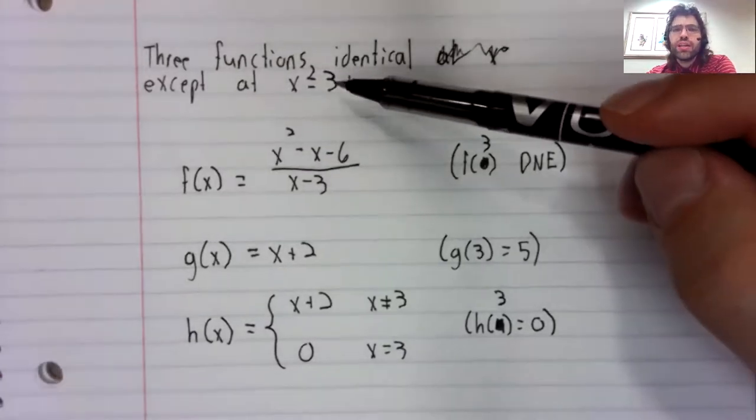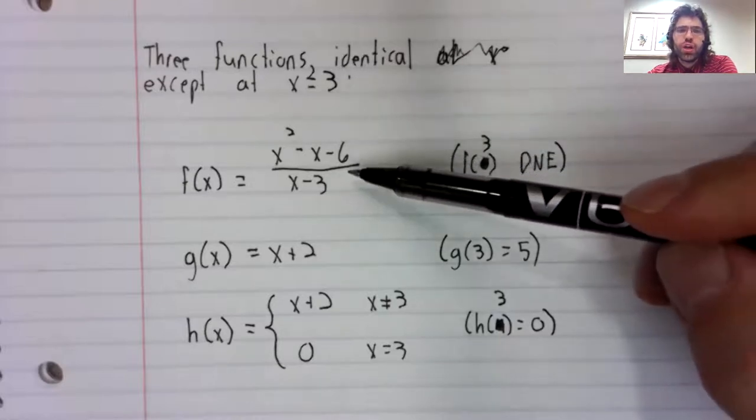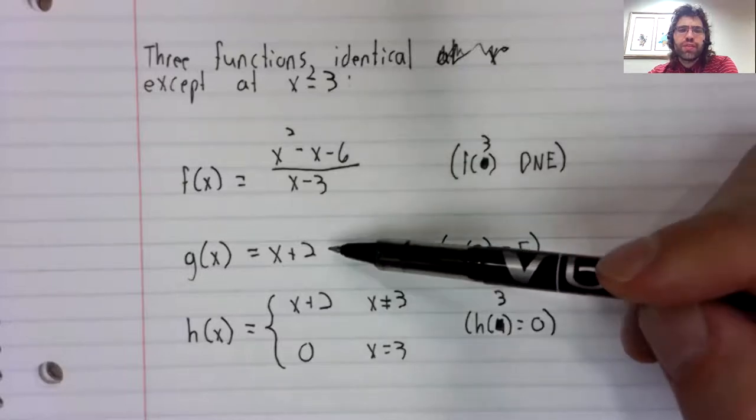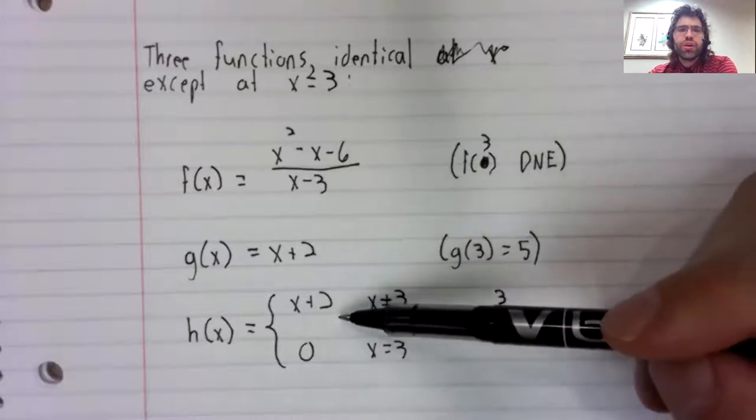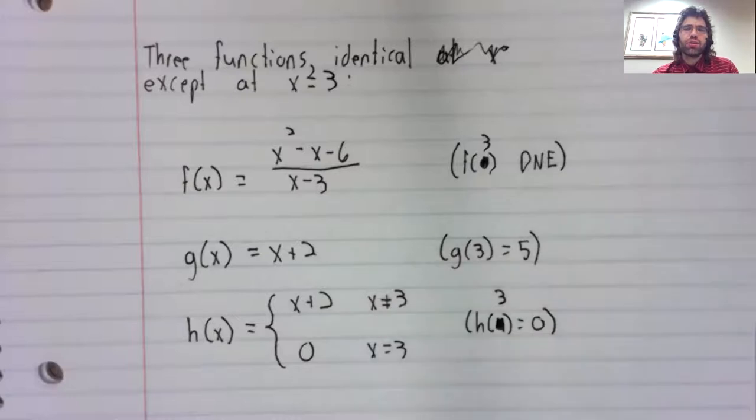At three, they're different. This function is not defined at three. This function equals five at three. This function equals zero at three.